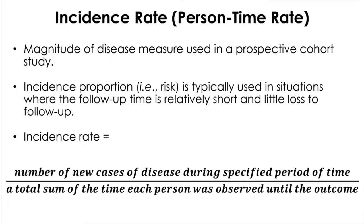That is the reason why we need another incidence measure to take into account the time information that each member of the cohort contributes. The calculation of incidence rate seems simple based on that equation here. In the numerator, the number of new cases during a specified period of time, which is basically the same as the incidence proportion.